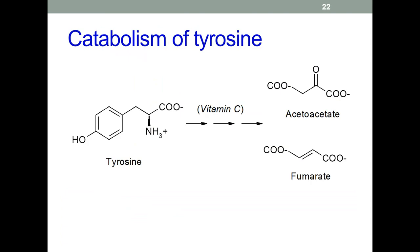Back to the chemistry: vitamin C is also needed for the catabolism of the amino acid tyrosine. This is another complicated multi-enzyme pathway, which I've summarized here. Eventually, tyrosine is catabolized to acetoacetate and fumarate — two molecules important in energy metabolism.